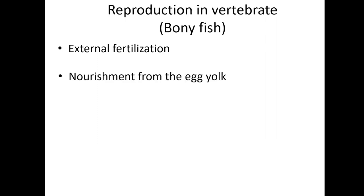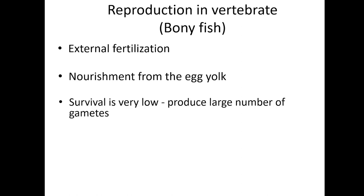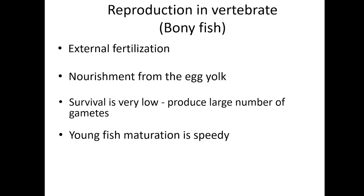The majority of bony fish reproduce via external fertilization. The developing embryo is nourished by egg yolk. The presence of fertilized eggs and developing young in the water provides opportunities for predation, resulting in a loss of offspring. Therefore, millions of eggs must be produced by individuals, and the offspring produced through this method must mature rapidly.